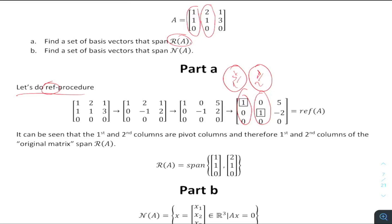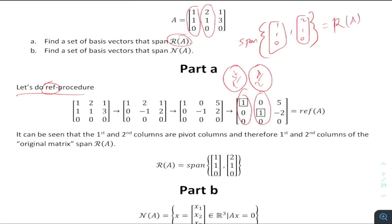Then you take the first and second columns of the original matrix and write them as your basis vectors. You write something like: [1, 1, 0] and [2, 1, 0]. You can use script R notation to denote the range space in LaTeX or MS Word.